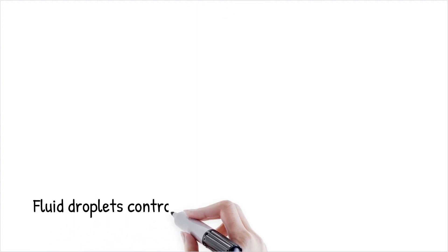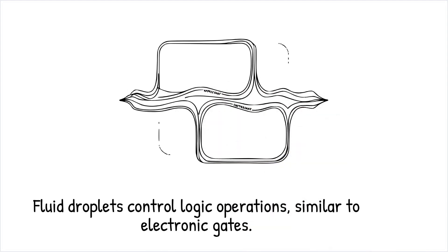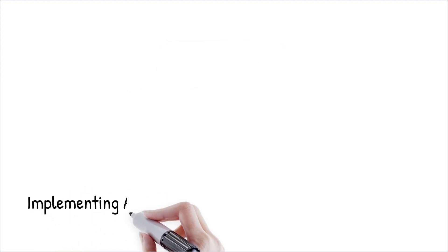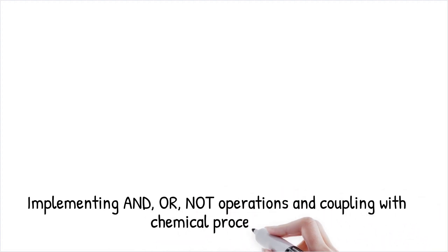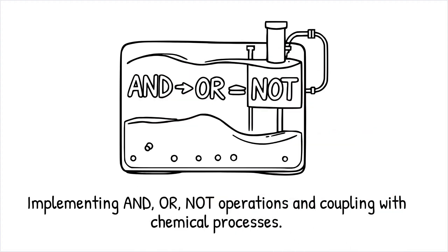Logic operations in liquid computing are achieved by controlling the movement and interactions of fluid droplets or streams. Fluidic logic gates, analogous to electronic gates, are created by directing fluid flow through specific pathways that merge, split, or redirect. These systems can implement operations like AND, OR, and NOT using the physical behavior of liquids. Additionally, liquid systems can couple computation with chemical processes, enabling hybrid devices that perform both logical and biochemical tasks simultaneously.